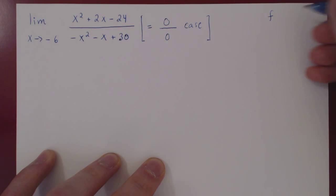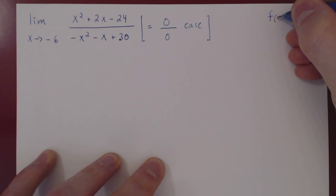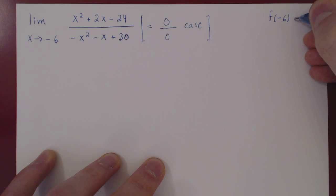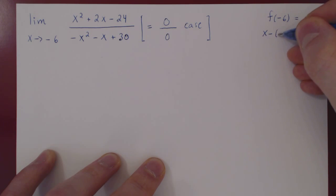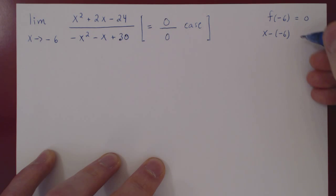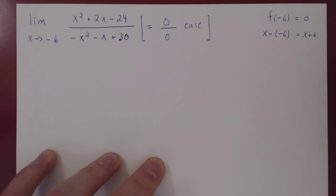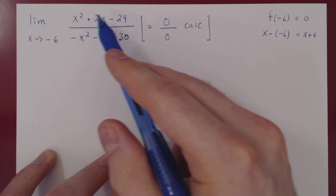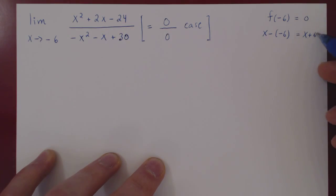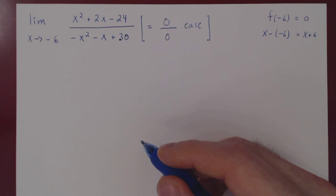So we can use the zero theorem. If f(x) is your polynomial and f(-6) = 0, then a free factor is x minus the zero, which is x - (-6), and this is simply x + 6. So both quadratic polynomials have a factor of x + 6, and we can use that to factor them.